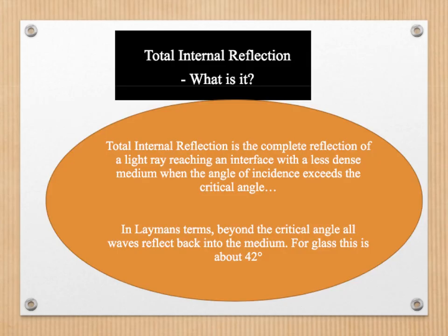So what is total internal reflection? Well, as we looked at in the last video, total internal reflection is the complete reflection of a light ray reaching an interface with a less dense medium when the angle of incidence exceeds the critical angle. Beyond the critical angle all waves reflect back into the medium. As we saw in the last tutorial, the critical angle for glass is about 42 degrees. So any waves approaching glass at an angle greater than 42 degrees will reflect back inwards.